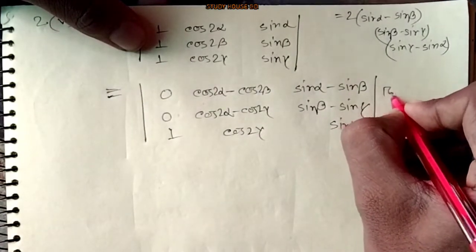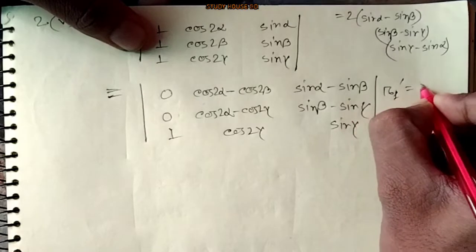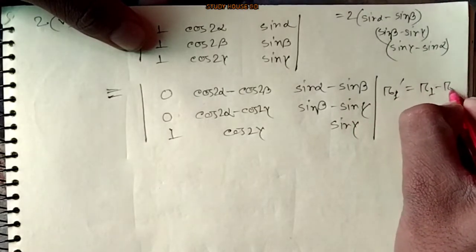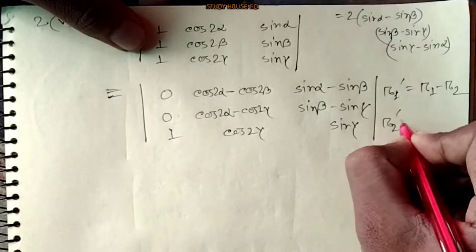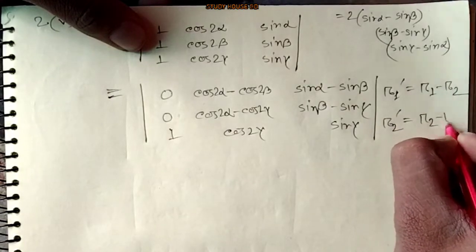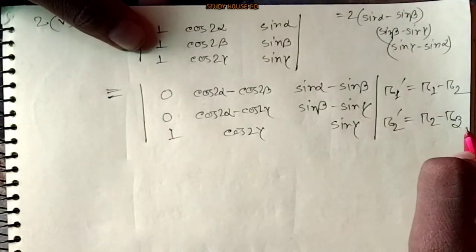What do we do? R1 prime equals R1 minus R2, R2 prime equals R2 minus R3, R means rho.